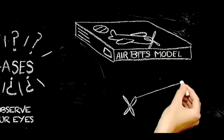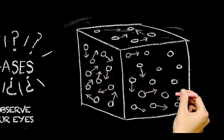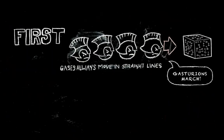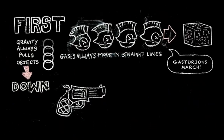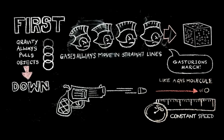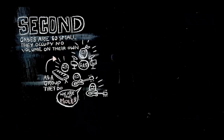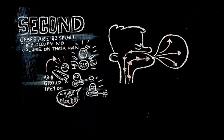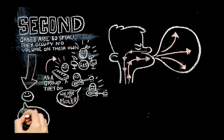Science is based on observation. Unfortunately, we cannot observe gases with our eyes — they're too small. We have to use our other senses to make observations and draw conclusions. Observations are compiled and we create a model — a way scientists describe the properties of physical phenomena. First, gases always move in a straight line. Second, gases are so small they occupy no volume on their own. As a group they do — blow up any balloon and you can see how volume changes — but single gas molecules have no volume compared to other forms of matter, so we just call it zero for simplicity.